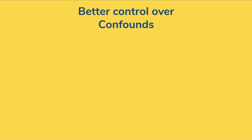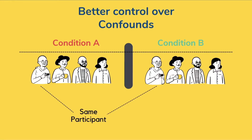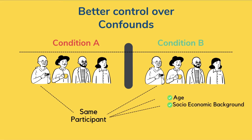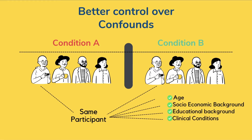The other advantage of the within-subjects design is that it allows for better control over confounds. Since the same participants are used across all conditions, we have better control over confounds such as assignment bias. Additionally, this design allows us to control for individual variability, since having the same participants controls for inter-individual differences introduced from differences in age, socioeconomic background, educational background, clinical conditions, and other aspects that can introduce inter-individual differences, thereby skewing the data and impacting the final conclusions of the study.